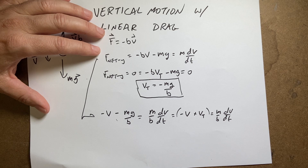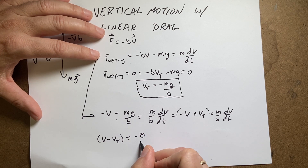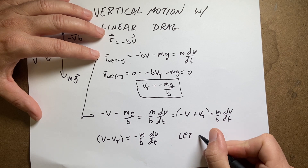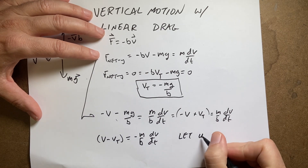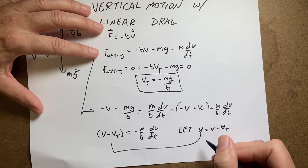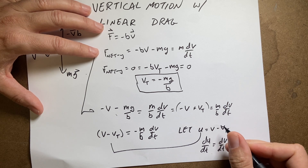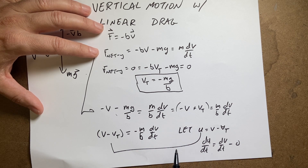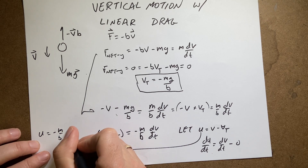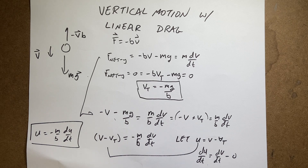I have this term (V minus VT) here. I can rewrite this as: V minus VT equals negative (m/B) dV/dt. Now let U equal V minus VT. If I make that substitution, dU/dt equals dV/dt, since VT is a constant. So instead of dV/dt I can put dU/dt, and I get: U equals negative (m/B) dU/dt. That's an easier equation — it's the same form as horizontal linear drag without the gravitational force. But we'll solve it anyway.